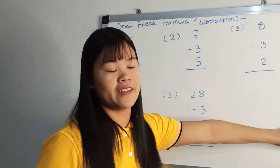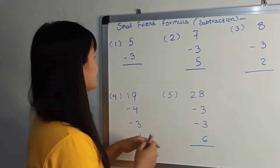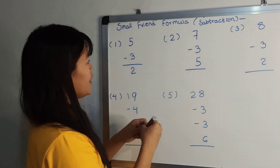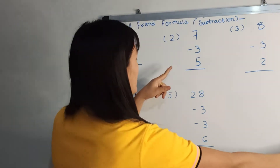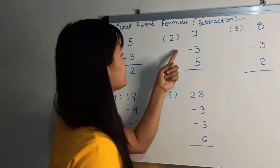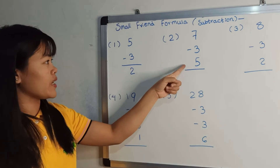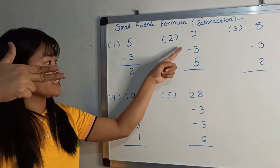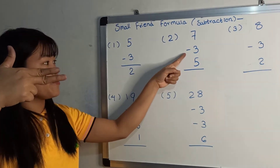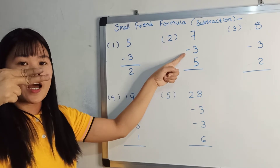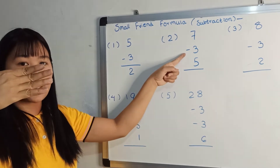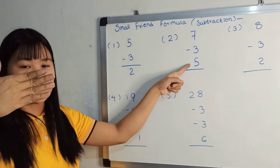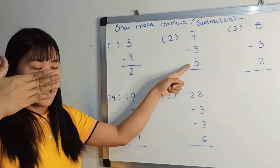Now, we have 2 noodles. We have 3 noodles. We have minus 3. It is basically chaos.